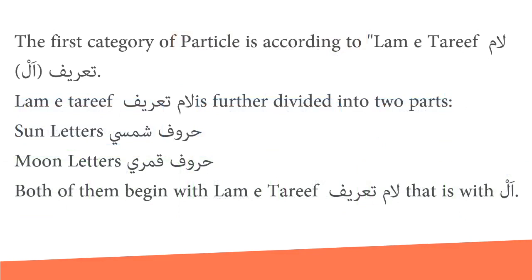The first category of particle is according to lam ta'rif — al. Lam ta'rif is further divided into two parts: sun letters (huruf shamsiyya) and moon letters (huruf qamariyya). Both of them begin with lam ta'rif — that is, with al. Now we are going to compare both of them.